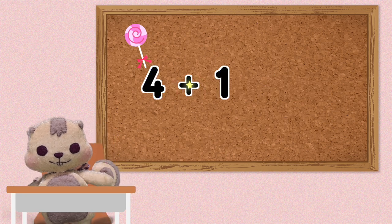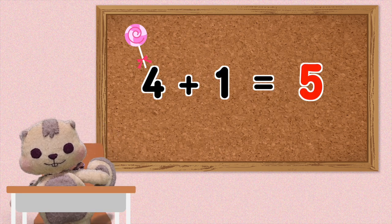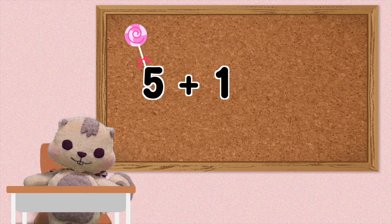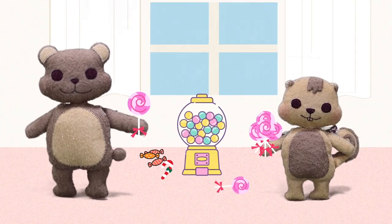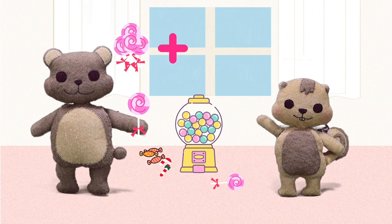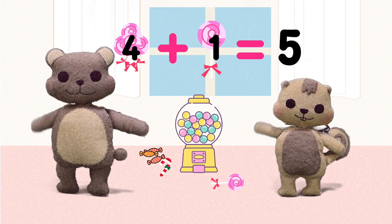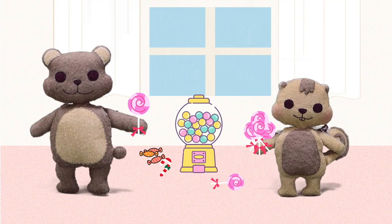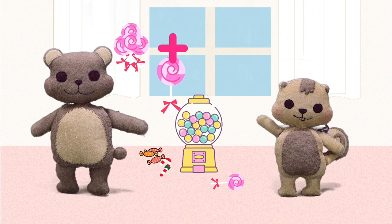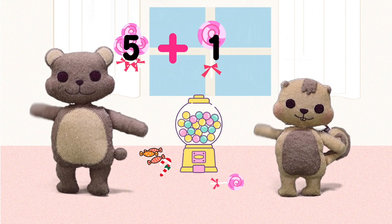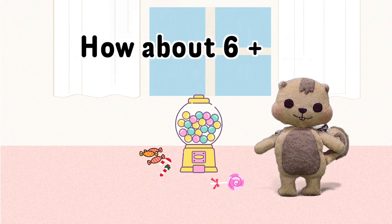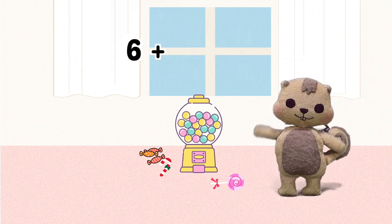Learn our addition facts! Let's do addition together! 4 lollipops plus 1 lollipop: 4 plus 1 equals 5! 5 lollipops plus 1 lollipop: 5 plus 1 equals 6! How about 6 plus 1? 6 plus 1 equals 7!